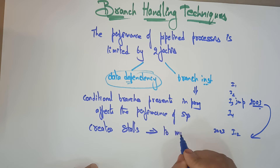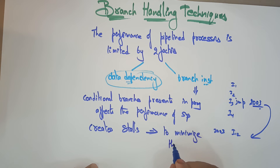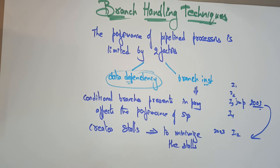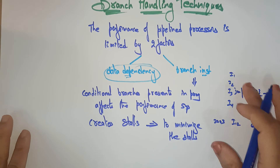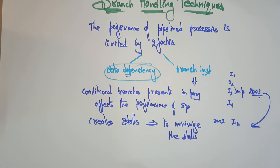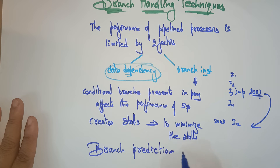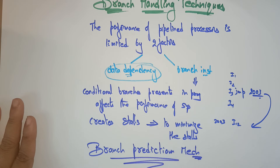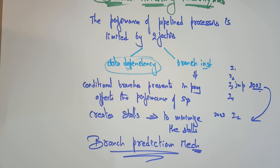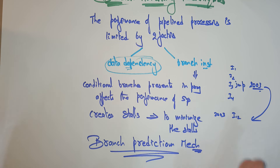To minimize the stalls associated with the control hazards — whatever control hazards are occurring here — an efficient branch prediction mechanism has to be used. We use the branch prediction mechanism because conditional branches present in the program decrease the performance of a system by creating stalls, so to minimize those stalls associated with control hazards, an efficient branch prediction mechanism has to be used.